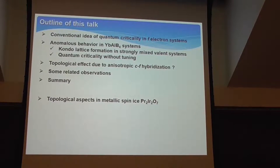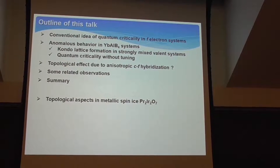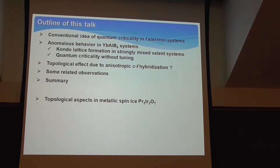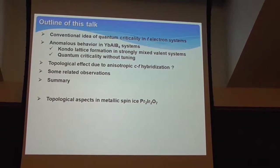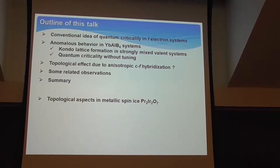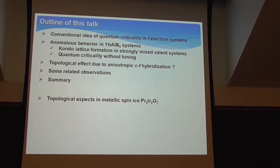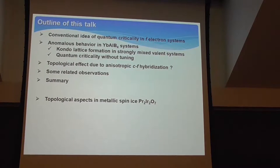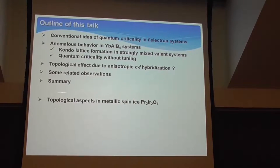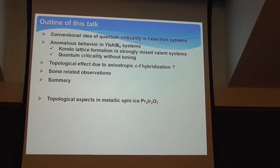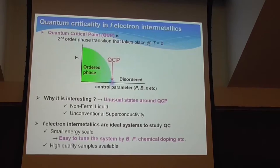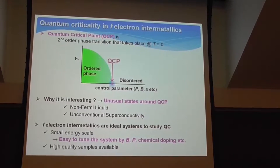First, I would like to introduce the conventional idea of quantum criticality, which is magnetic quantum criticality in an F-electron system. After that, I'd like to discuss how the topological aspects differ from conventional observations. Then I'll discuss topological effects due to the anisotropic CF hybridization, and some related observations. If I have time, I'll briefly mention topological aspects in the metallic spin-ice system. So let me start with the introduction of the basic conventional idea.